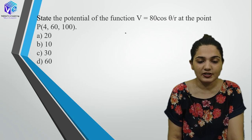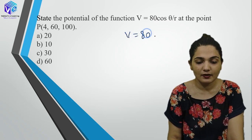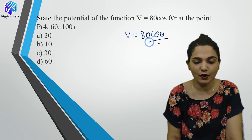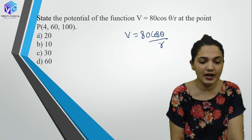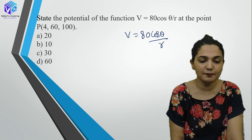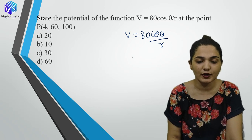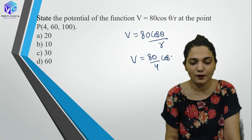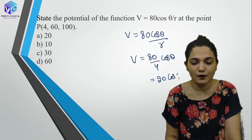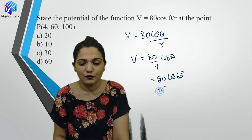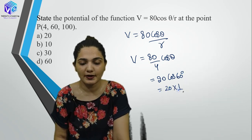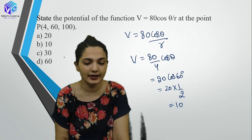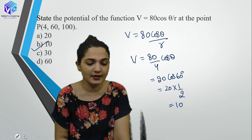State the potential of the function V = 80·cosθ/r at point P where r=4 and θ=60°. V = (80/4)·cos(60°) = 20 × (1/2) = 10. So the answer is 10.